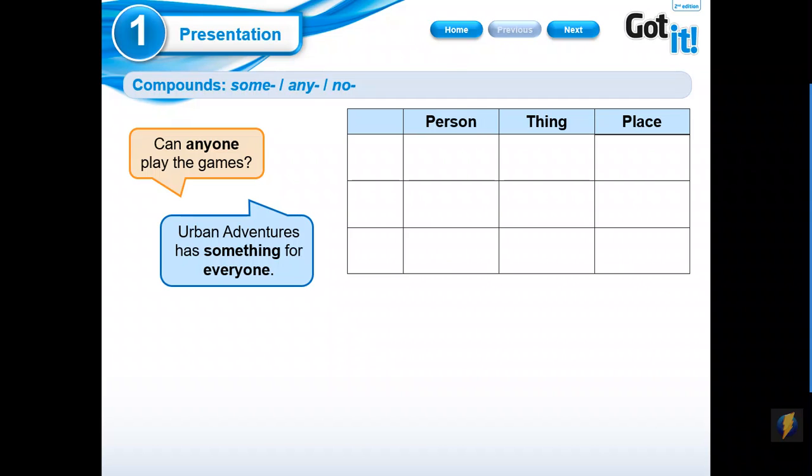Here we have this chart with the following words: PERSON, that is going to be represented by ONE or BODY; THING; and PLACE, that is going to be represented by WHERE. Right?